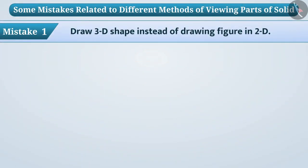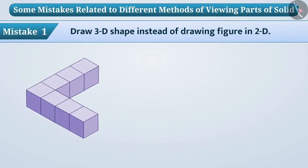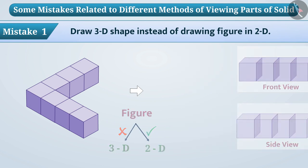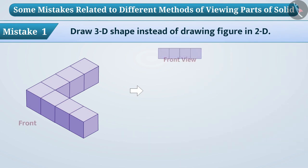Mistake one: if children are asked to draw a figure of solids as shown below, they again draw 3-D shape instead of drawing the figure in 2-D. Keep in mind that when we draw figure, they are in 2-D shape and not in 3-D. Therefore we can thus draw front view, side view, and top view.